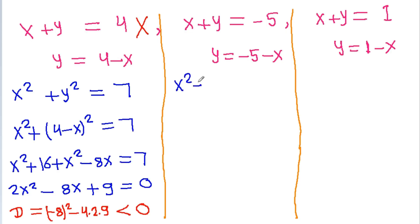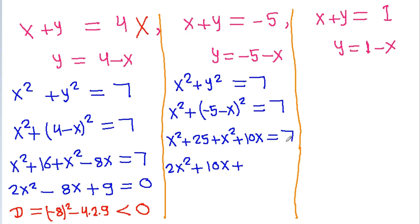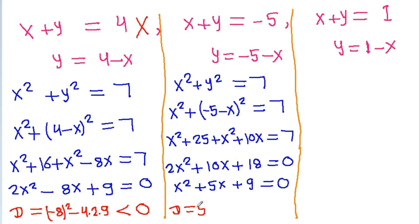Checking n equals minus 5: y equals minus 5 minus x, substituting into x squared plus y squared equals 7 gives 2x squared plus 10x plus 18 equals 0, or x squared plus 5x plus 9 equals 0. The discriminant d equals 25 minus 36, which is negative. So we cannot get a real value of x here either, meaning x plus y also cannot equal minus 5.